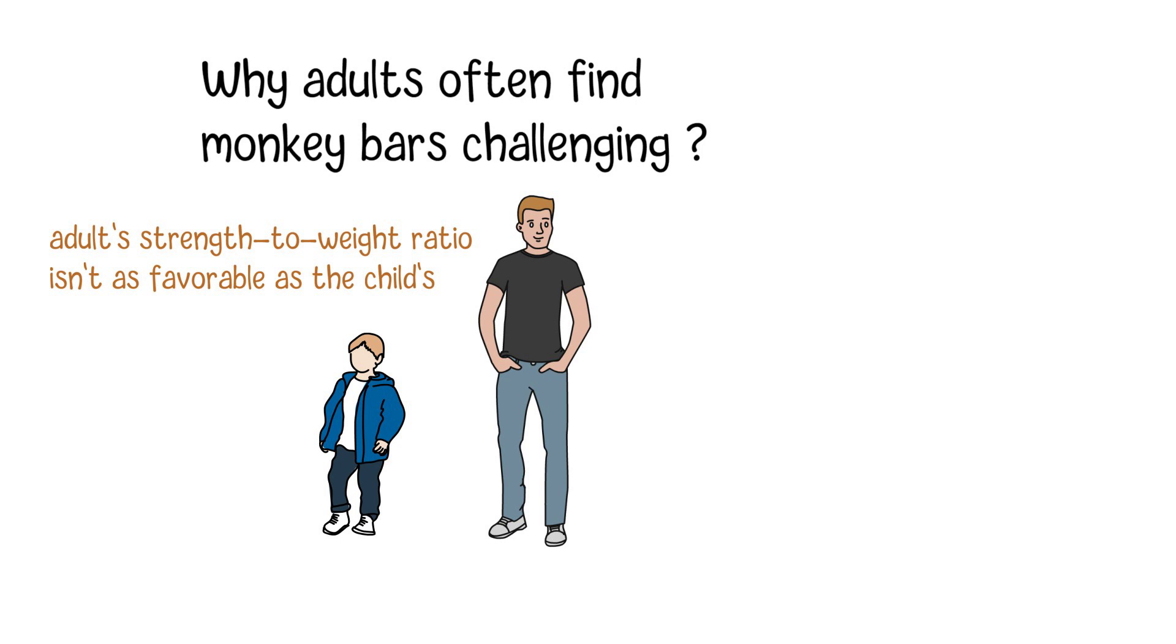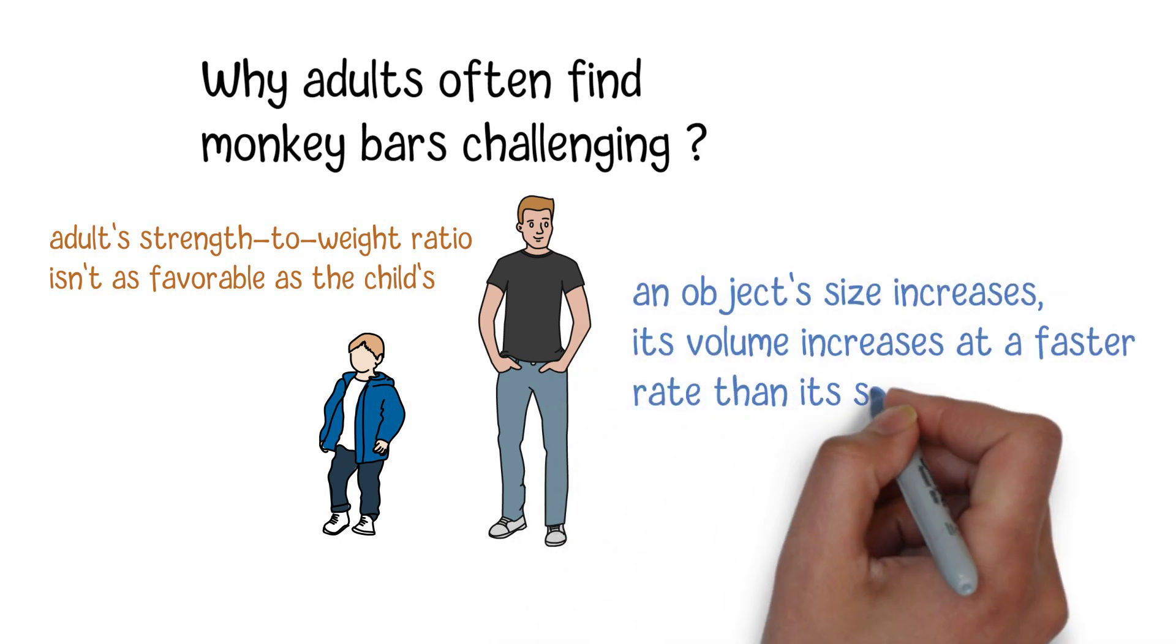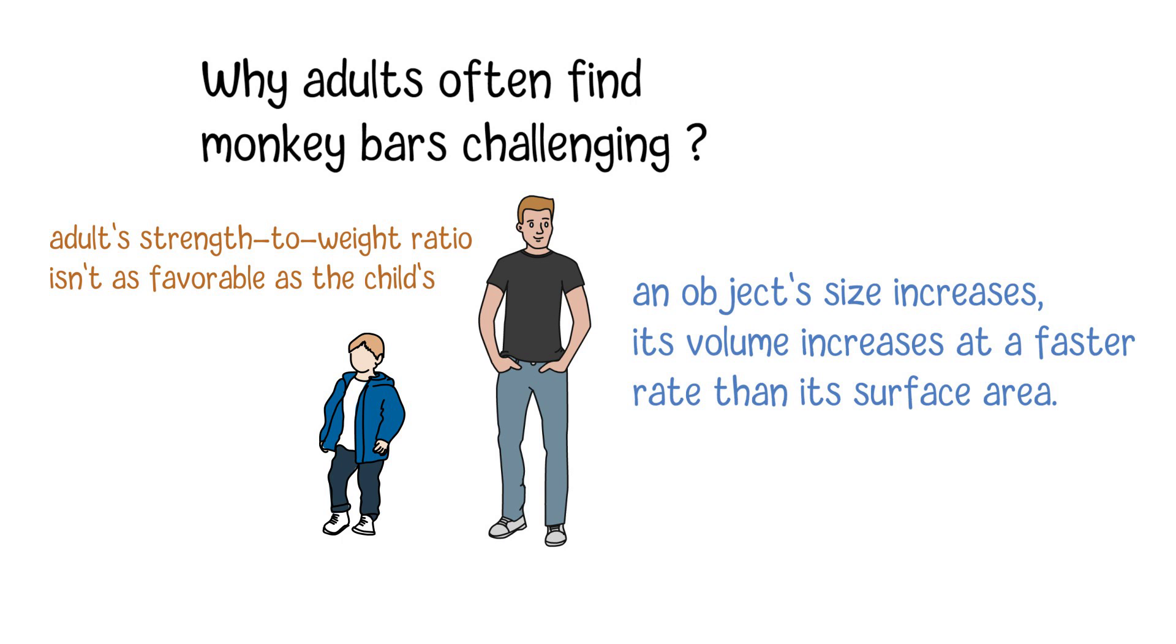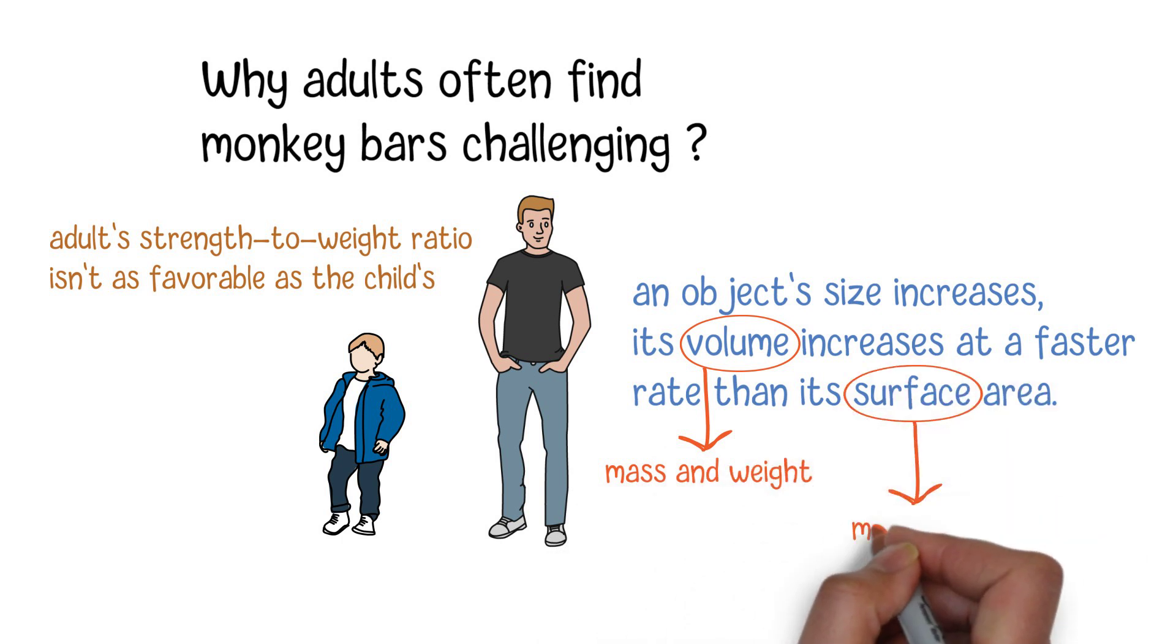The square cube law tells us that as an object's size increases, its volume increases at a faster rate than its surface area. In the case of a human body, the volume represents the mass and weight, while the surface area represents the strength of the muscles and the grip.